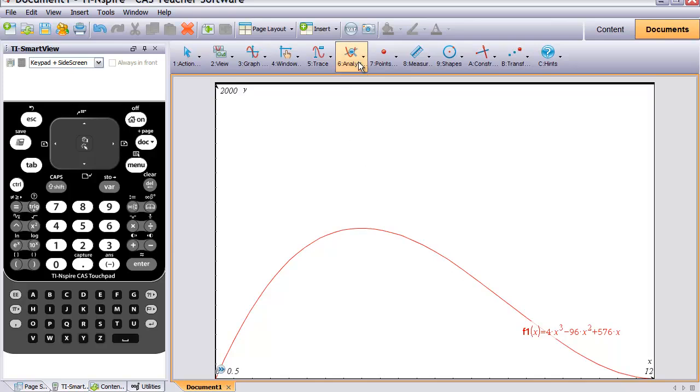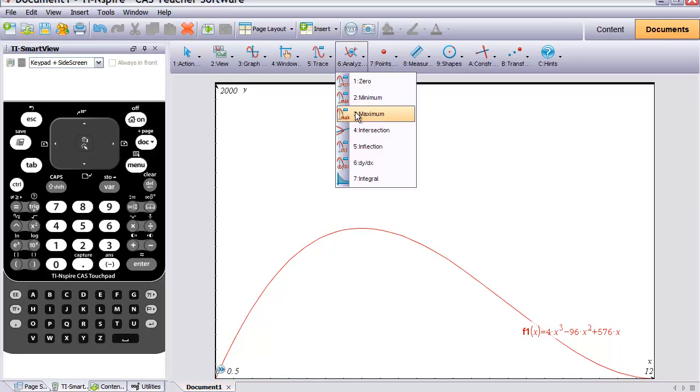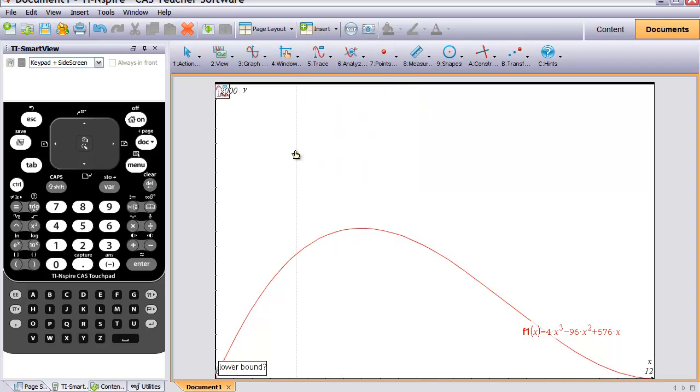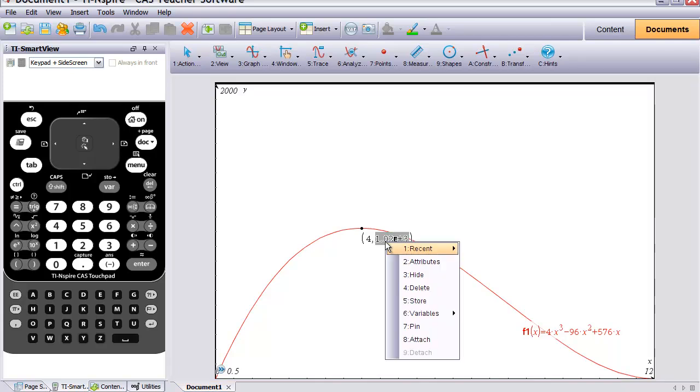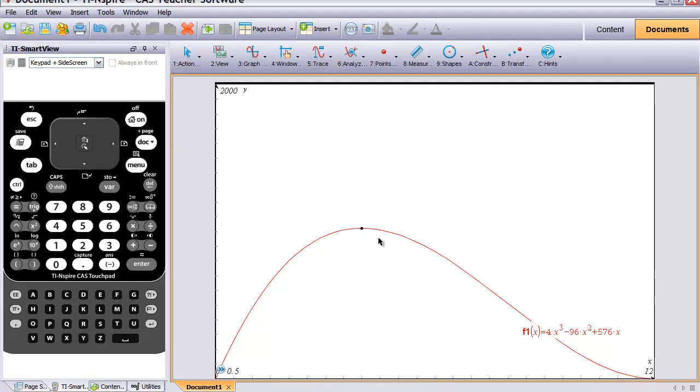So let's go ahead and find that. So I'm going to go to menu, or up to menu, and then analyze. And we want to find the maximum. So it wants to know the maximum between where. Well, I know it comes somewhere in this range. So I'm going to click to the left of it, and then we click over here to the right of it. And there's that value. So it occurs when x is 4. And at that value, I'm going to change the attributes on that. So if I do that, it's at the point (4, 1024).